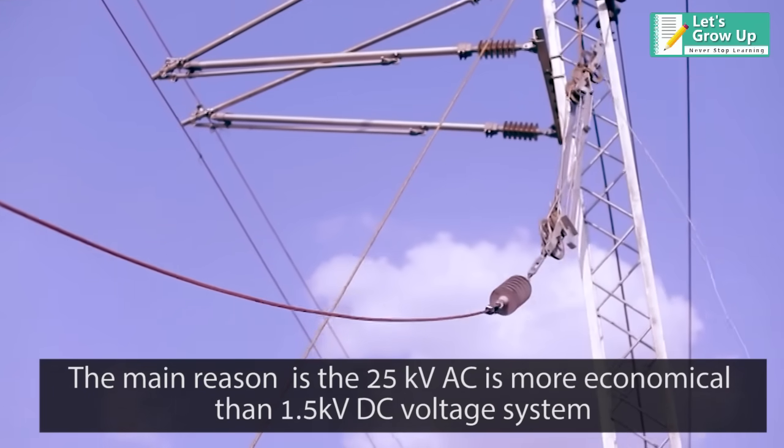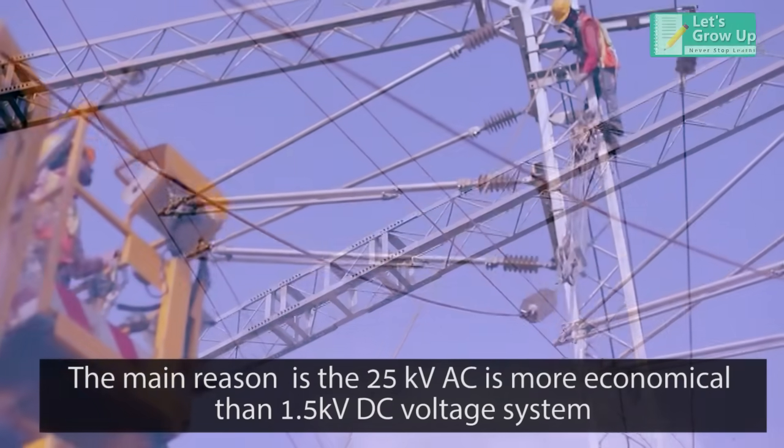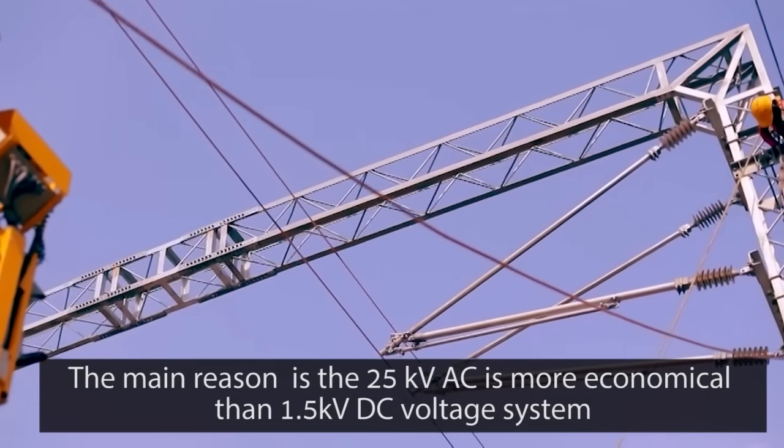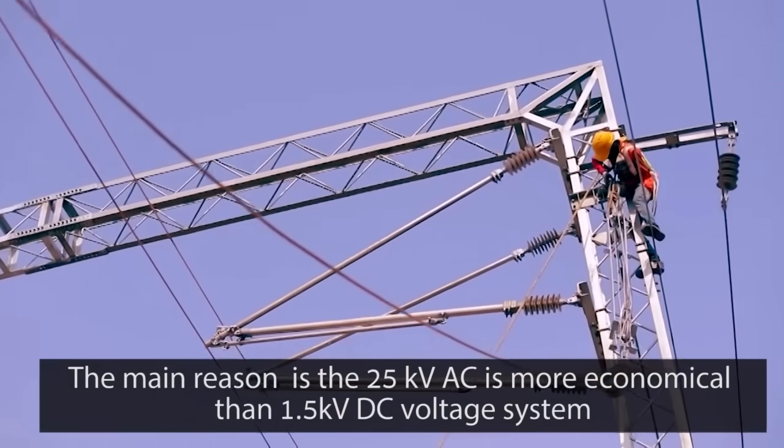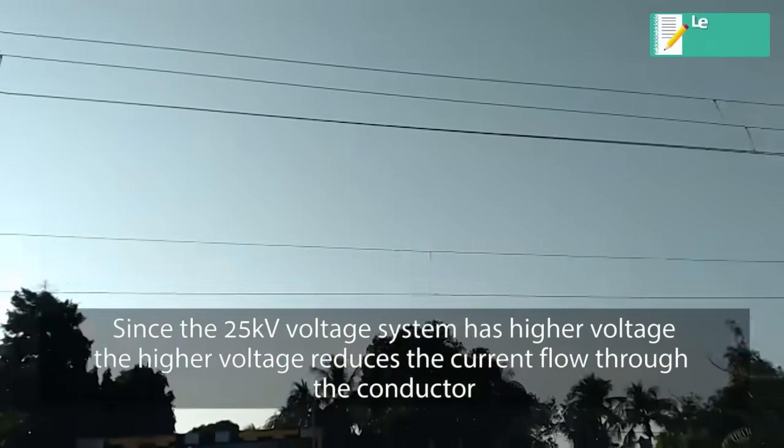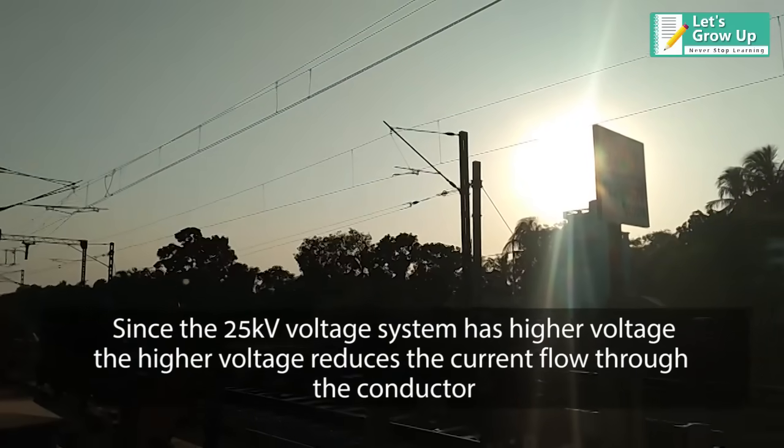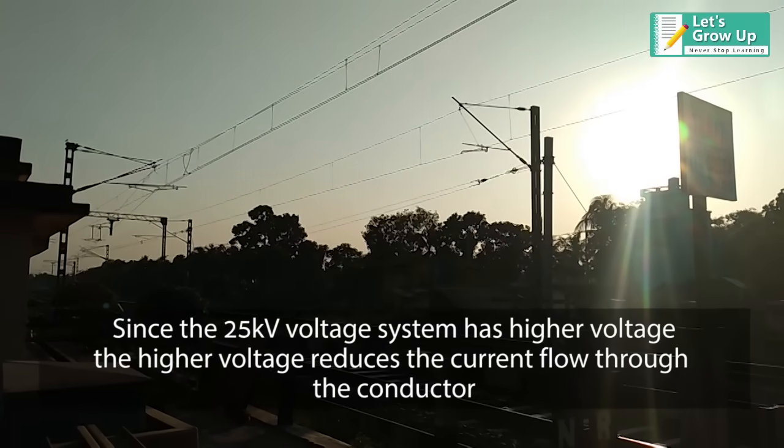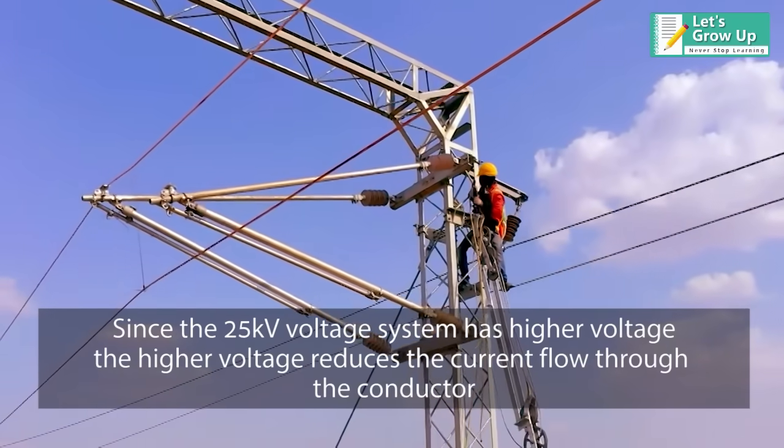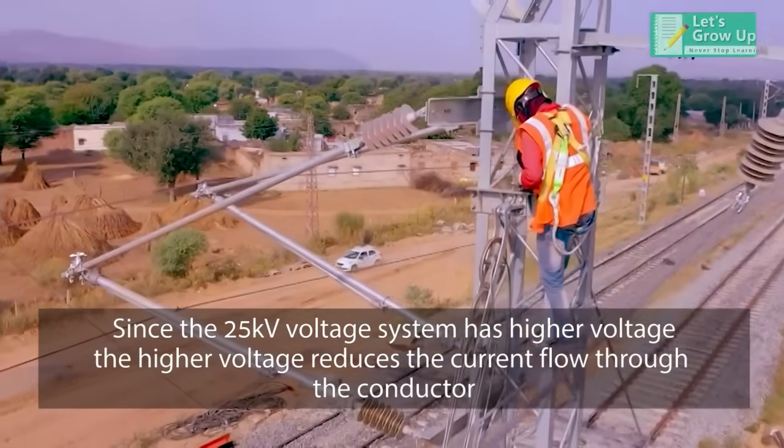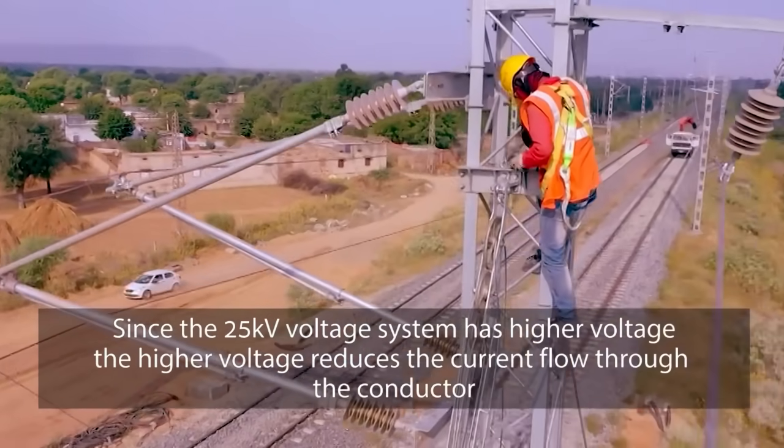The main reason is the 25 kilovolts AC is more economical than 1.5 kilovolts DC voltage system. Since the 25 kilovolt system has higher voltage, the higher voltage reduces the current flow through the conductor. This reflects to reduce the conductor size and the cost of the conductor gets less.